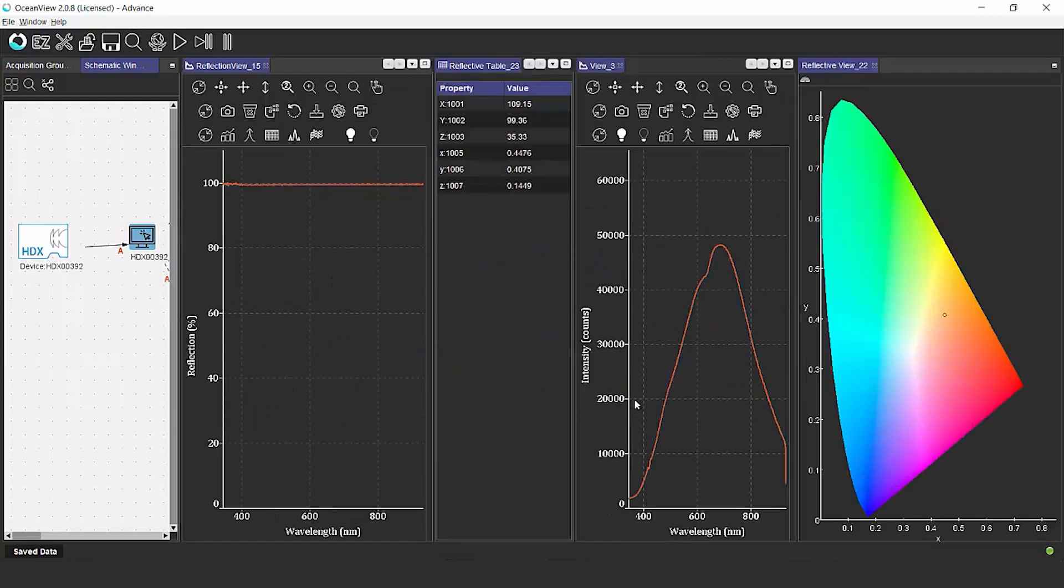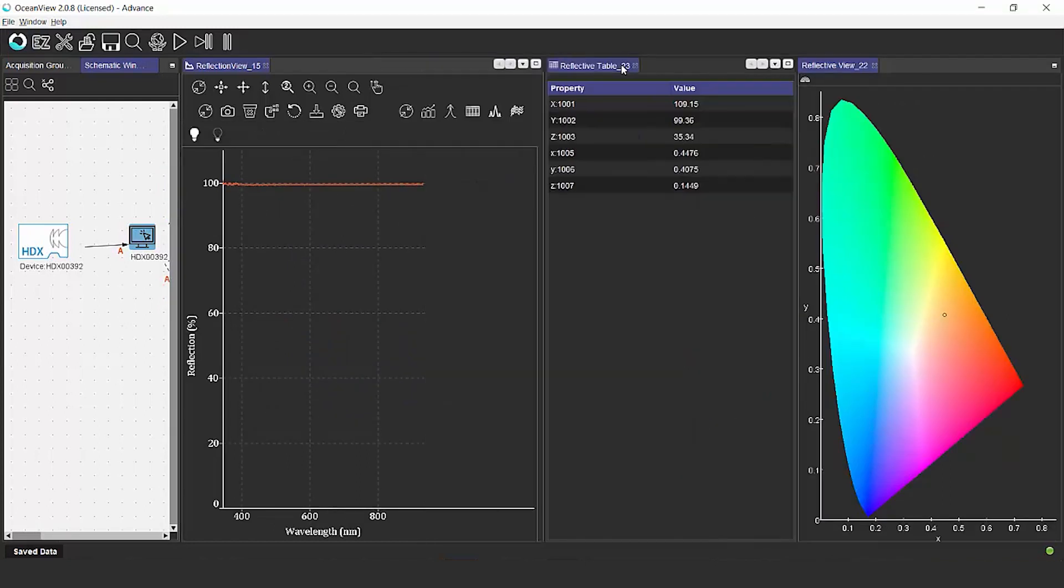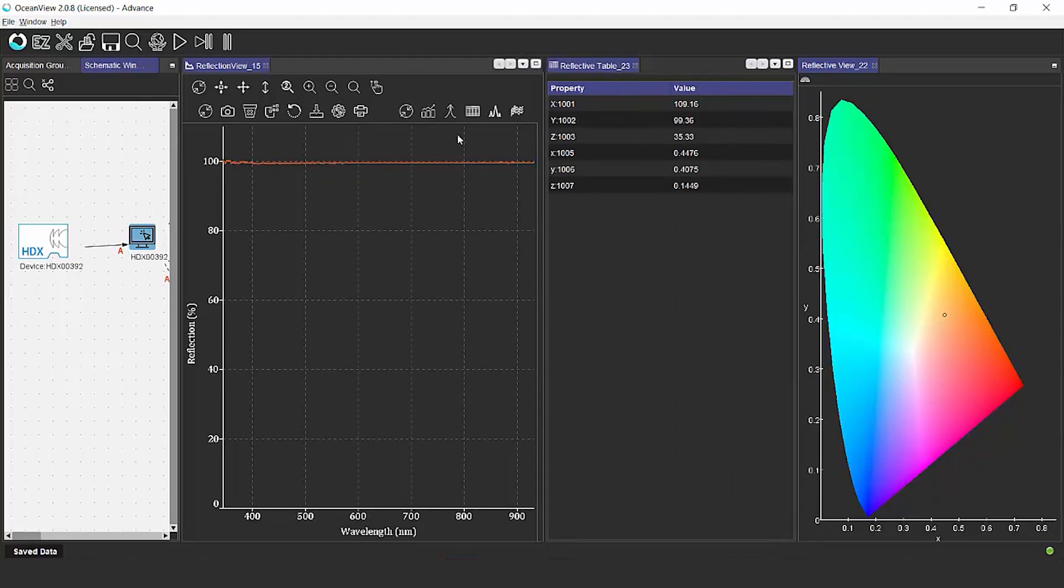Using this, we can actually see in CIE color space where our colors are falling. And what you'll see in the software is changes in the chromaticity diagram as we look at different colors.